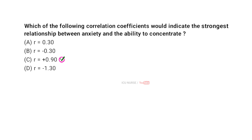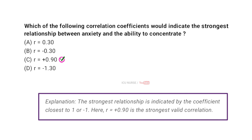The correct answer is C: R is equal to plus 0.90. The strongest relationship is indicated by the coefficient closest to 1 or minus 1. Here, R equals plus 0.90 is the strongest valid correlation.